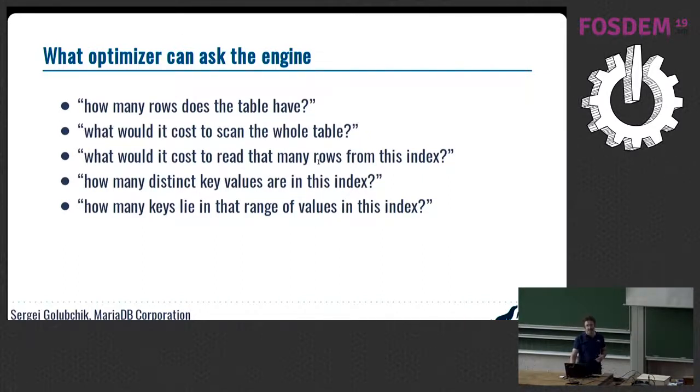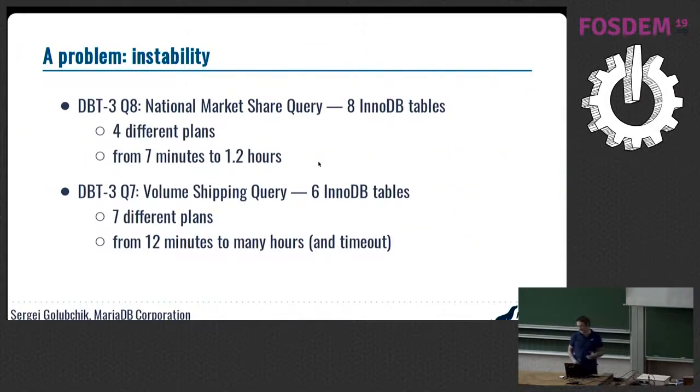That works reasonably well, but there are some issues with that. One of the problems is instability. Not all engines have these values all the time already. They calculate them on the fly. InnoDB, for example, is doing it using random index dives. And because they are random, they supposedly don't have any bias. On the other hand, because they are random, they do not give repeatable results. Those are the tests I've done on dbt3 benchmarks on query Q8. There are eight InnoDB tables involved in this query. Just by repeating many times, I have seen four different execution plans with query execution time ranging from seven minutes to 1.2 hours. And for Q7, I've seen seven different plans. The fastest one was executed in 12 minutes. The longest one, I just waited for a few hours and killed the query.